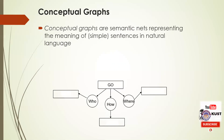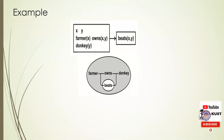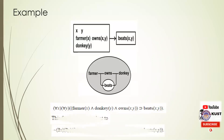Another example of a conceptual graph can be seen in this graph: 'John goes to New York by bus.' This is also an example of propositional logic — 'if a farmer owns a donkey, then he beats it' — which can be converted into a semantic net, and this graph can again be translated back to the following predicate logic.